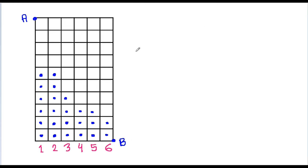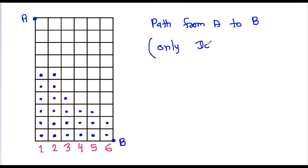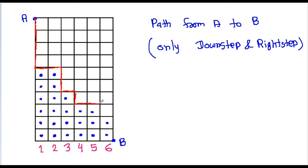We need to find the path from point A to point B, considering only down steps and right steps. For example, in this case the path goes: down step, right step, down step, right step, down step, right step, down step, right step, down step. Every path obtained using only down steps and right steps corresponds to a valid sequence of marks. So we need to count how many such paths exist.